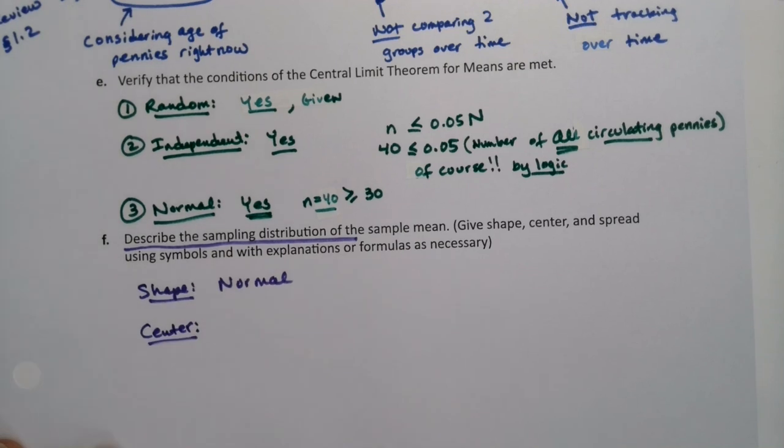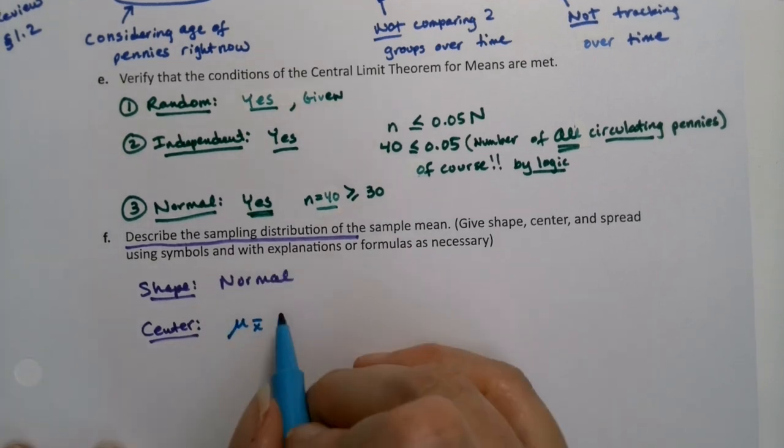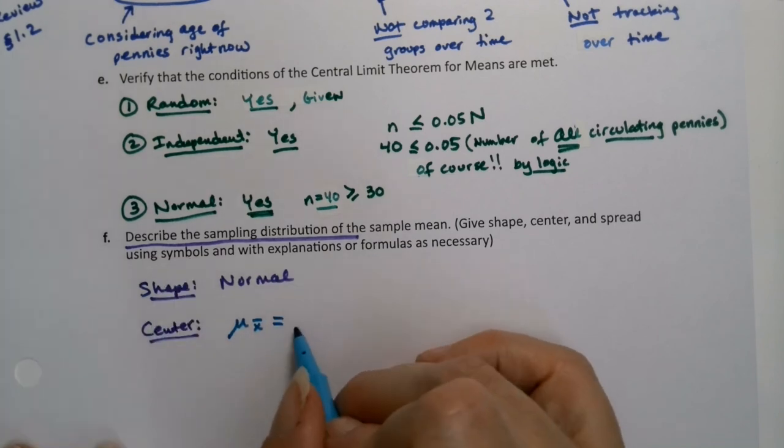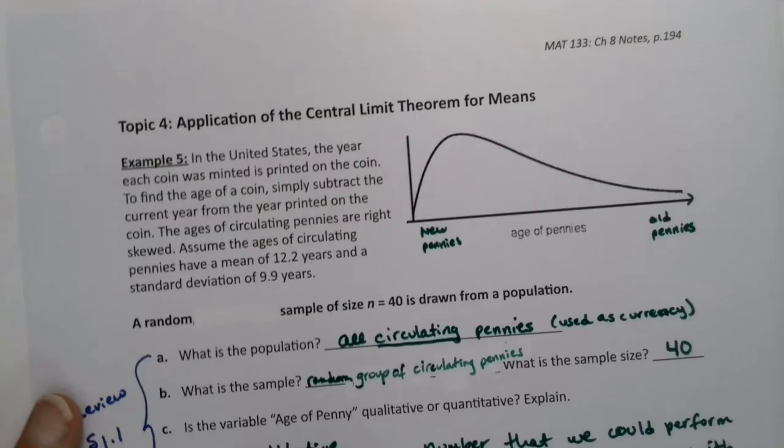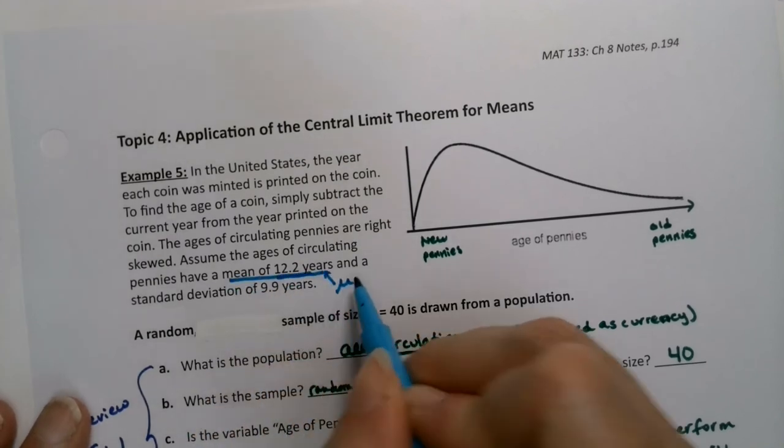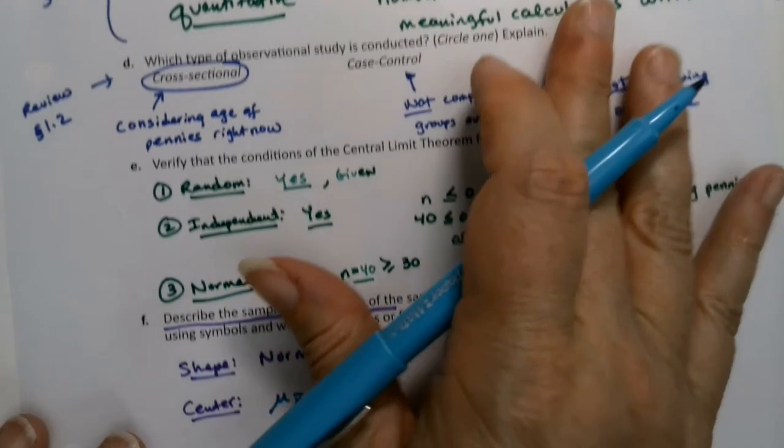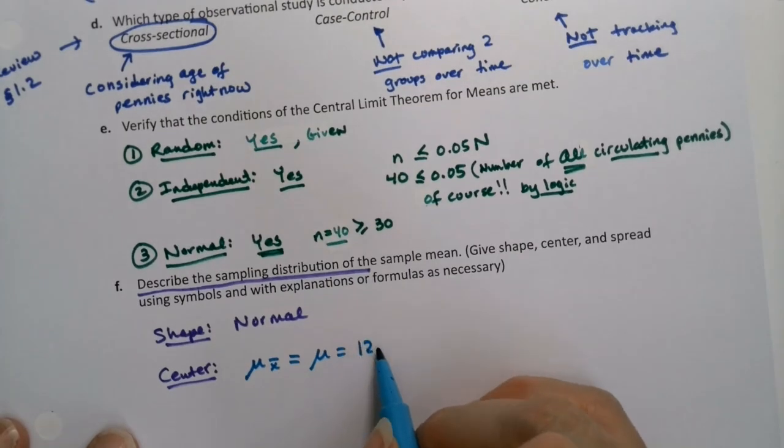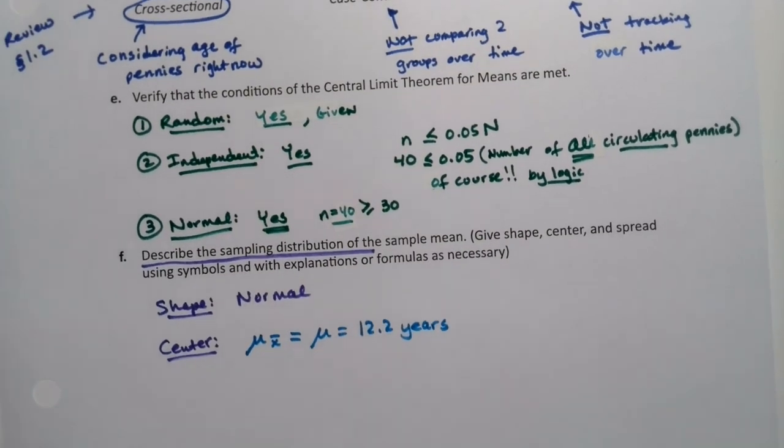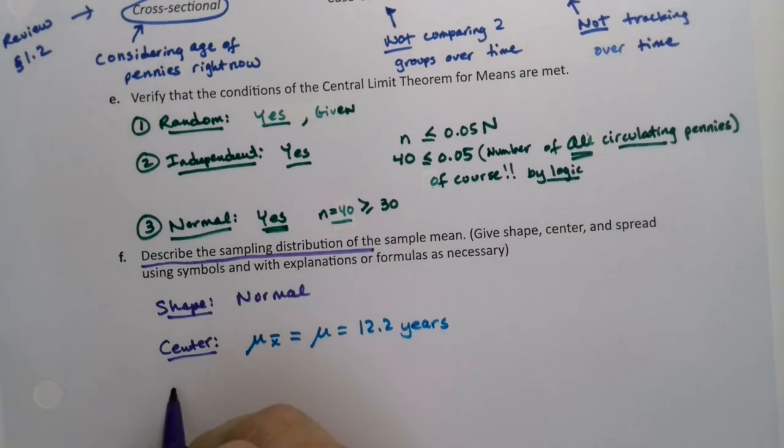Center. Well, the center we learn from before is the mean of X bars. So give it the symbol. So that's what it means when I say symbols right there. So mu sub X bar, which is mu, which was right here, has a mean of 12.2. That's mu. 12.2. So 12.2 years. It has units on this one.